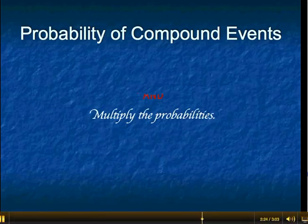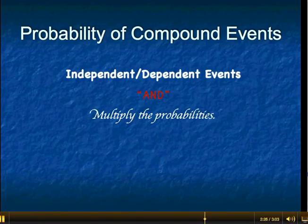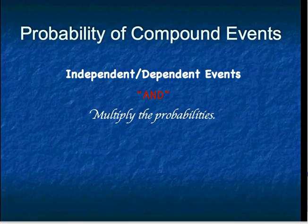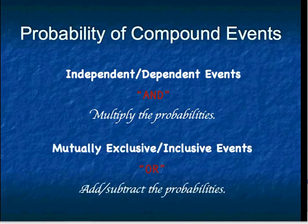In review, let's remind ourselves of the difference between the compound probabilities. For independent and dependent events, we are usually talking about two things happening at the same time and both must happen — in that case, we multiply the probabilities. When we are talking about mutually exclusive or inclusive events, we usually use the word 'or,' meaning only one or the other event has to occur. In those cases, we use addition and subtraction of the probabilities rather than multiplication.